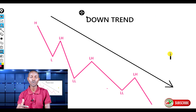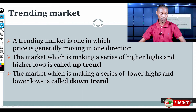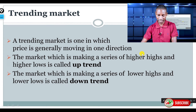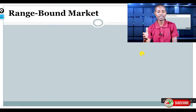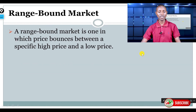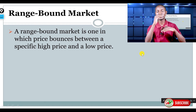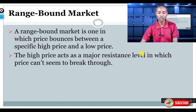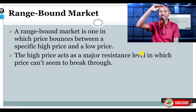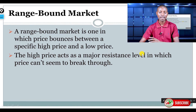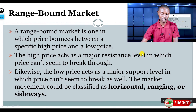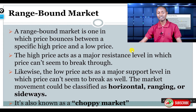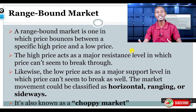So this is the first behavior of the market environment. Let's continue with the second environmental behavior of the market. If a market is not trending up or down, then it is what we call a range-bound market. A range-bound market is a market in which the price bounces between a specific high and a specific low. It has a highest price which it fails to break — we call that resistance — and a lowest price which it cannot break either — we call that support. Different traders also call this a horizontal, ranging, or sideways market, and others call it a choppy market.